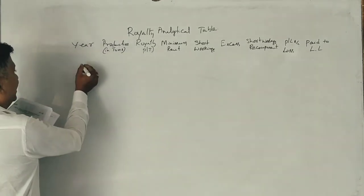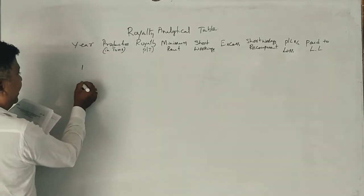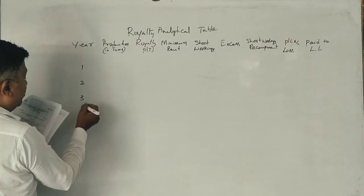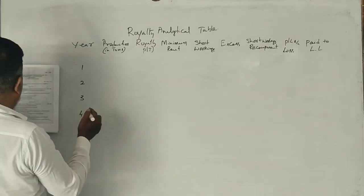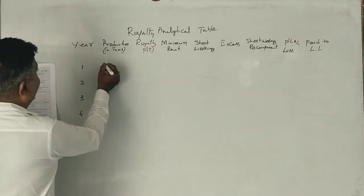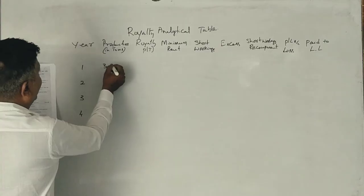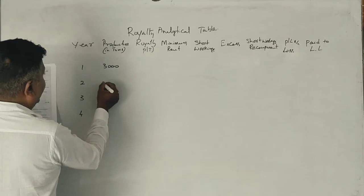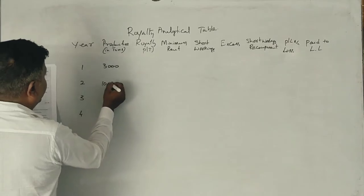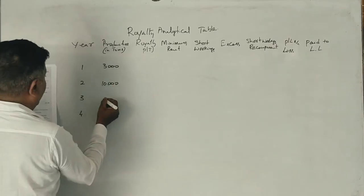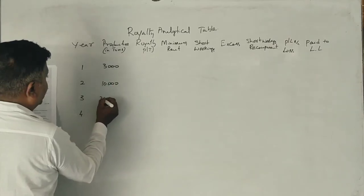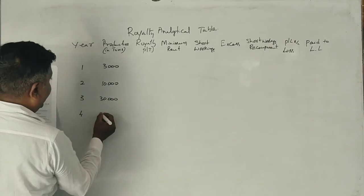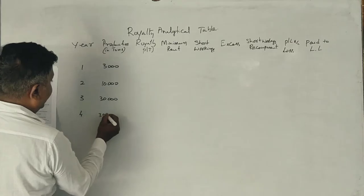First year: 3,000 tons. Second year: 10,000 tons. Third year: 30,000 tons. Fourth year: 35,000 tons.